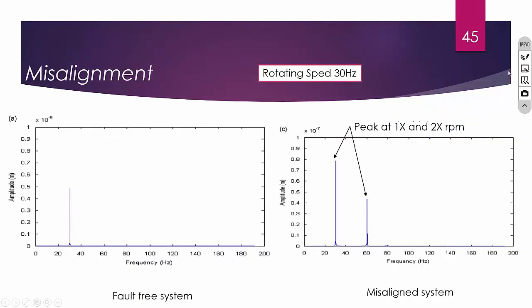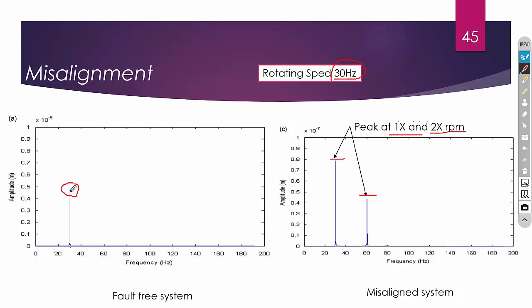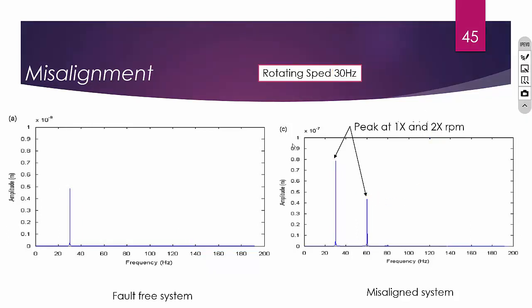In case of misalignment, you will have peak values at both 1× and 2× RPM, whereas for unbalance it is only 1× RPM. For example, with the system rotating at 30 Hz, the normal (initial) signal has a very small low-amplitude peak. But after some duration of machine operation, the faulty signal shows a peak at 1× RPM as well as a peak at 2× RPM. If there are two such peak values, it means the shaft has some misalignment. You can then identify the misalignment and take corrective action.